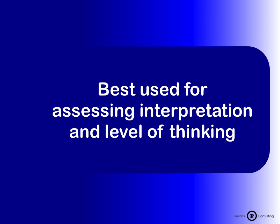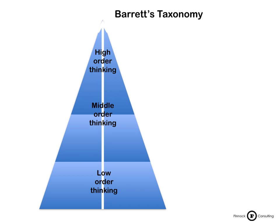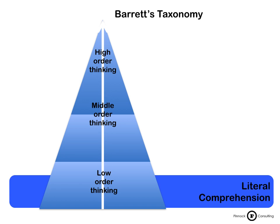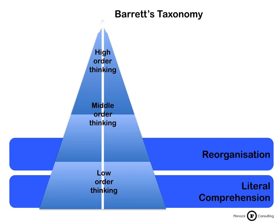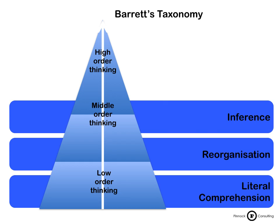Barrett's taxonomy was developed to describe and assess the different levels of reading comprehension. It consists of five levels and can be easily adapted for assessing listening, speaking, and writing — making it particularly useful when teaching and assessing languages and literacy. The lowest level is where learners can recognize and recall things like main ideas, make comparisons, and identify sequences. The next level is where they can reorganize ideas and concepts through classifying, summarizing, and outlining. The following level involves deducing or concluding from evidence — such as predicting, comparing, or examining cause and effect relationships.